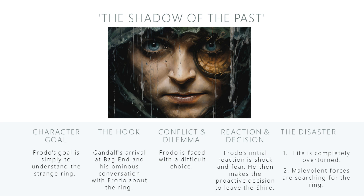By examining The Shadow of the Past, we can see how each of these five elements plays a crucial role in structuring the chapter. Tolkien, one of the most revered authors in the fantasy genre, instinctively uses the exact same building blocks that we have discussed here. This gives his chapters a strong sense of purpose, direction and conflict, making them an essential part of the overall narrative.